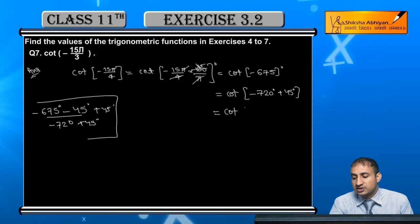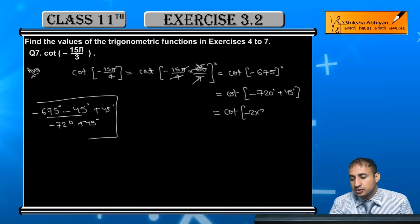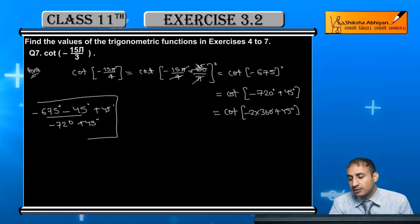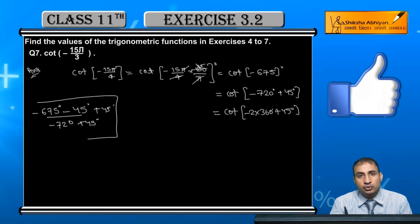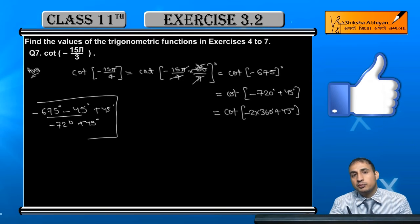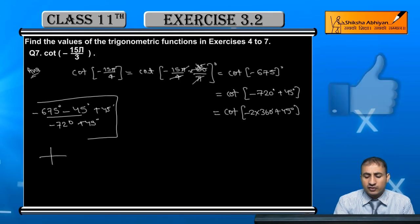So this is cot minus 2 times 360 degrees plus 45 degrees. Minus 2 times 360 means you take two rounds clockwise.